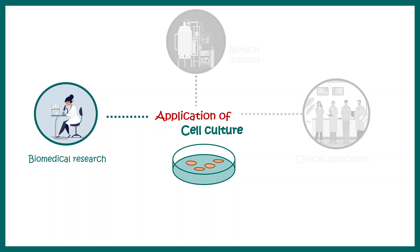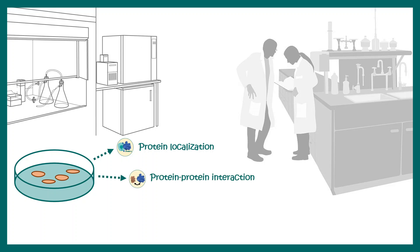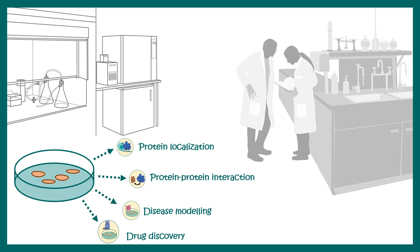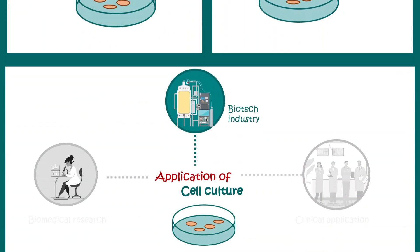Cell culture systems are also used to address fundamental scientific questions in biomedical research. For example, you can study protein localization using immunohistochemistry or fluorescent tagging, or determine whether two proteins interact using FRET-based assays inside a cell. You can also do disease modeling, test the effect of a drug or environmental stressor on cells, and assess drug efficacy by treating cells with different drug concentrations and observing whether apoptosis is triggered.